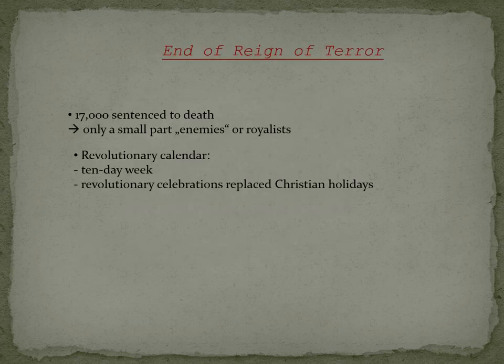The Reign of Terror ended in 1794. 7,000 were sentenced to death. Only a very small number of them were actual enemies, like royalists or aristocrats. Most just stood in the way or were victims of rumors.